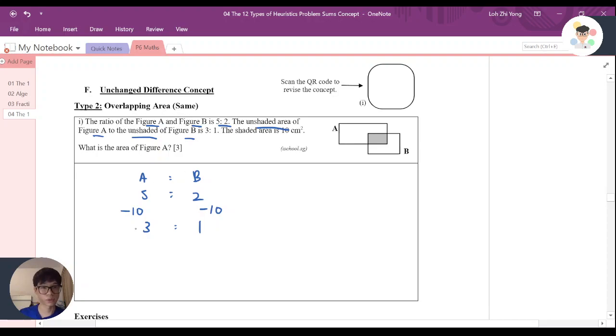Now, if you look at something like this, you know that minus 10 minus 10, the difference is supposed to be the same. This is unchanged different concept. So 5 minus 2 is 3. 3 minus 1 is 2.